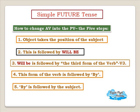For simple future tense, how exactly do we change from active to passive? The five steps are: first, the object takes the position of the subject; this is followed by 'will be'; 'will be' is followed by the third form of the verb (Verb 3); this form of the verb is followed by 'by,' which is a preposition; and 'by' is followed by the subject.